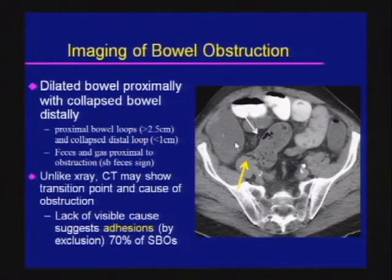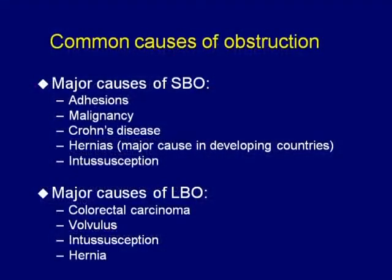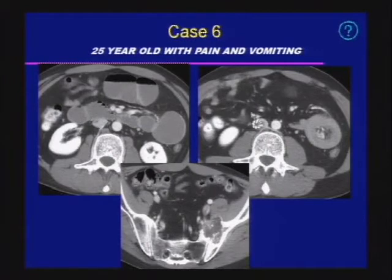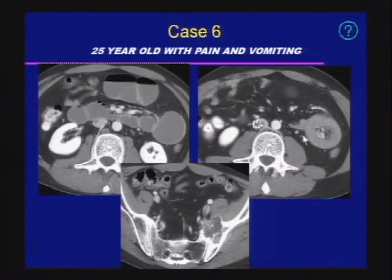Adhesive disease is responsible for about 70% of all small bowel obstructions. Case six: we see dilated loops proximally and decompressed loops distally. Looking at the transition site, there is an intussuscepting mass at the site of the small bowel obstruction.